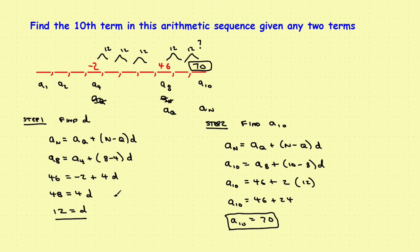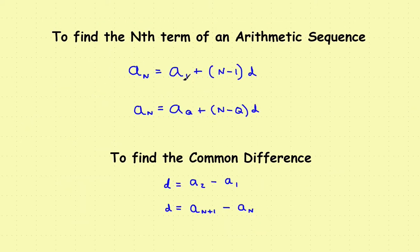So it's a two-step process: first find the common difference, then use it to find the desired term. If you know the first term, use a_sub_n = a_sub_1 + (n − 1) × d. If you only know some term in the middle, use the variation a_sub_n = a_sub_q + (n − q) × d. That's a quick review on arithmetic sequences.